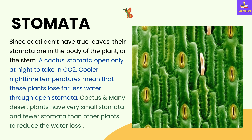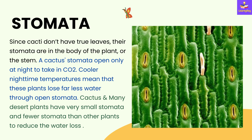The stomata of cactus plants. Since cacti don't have true leaves, their stomata are in the body of the plant or the stem. The cactus's stomata open only at night to take in carbon dioxide. Cooler night-time temperatures mean that these plants lose far less water through open stomata. Cactus and many desert plants have very small stomata and fewer stomata than other plants to reduce water loss.